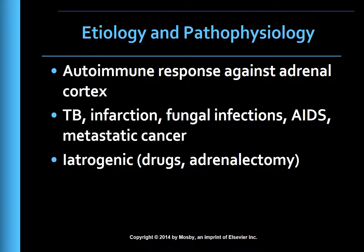The most common cause of Addison's disease in the United States is an autoimmune response, where adrenal tissue is destroyed by antibodies against the patient's own adrenal cortex. Although tuberculosis causes Addison's disease worldwide, it is now an uncommon cause in the United States. Other causes include infarction, fungal infections such as histoplasmosis, acquired immunodeficiency syndrome (AIDS), and metastatic cancer.